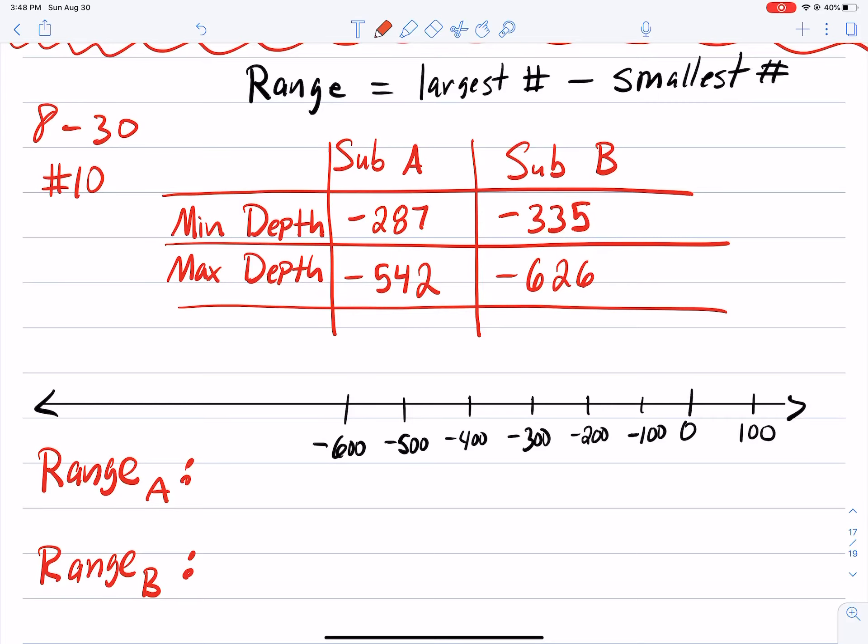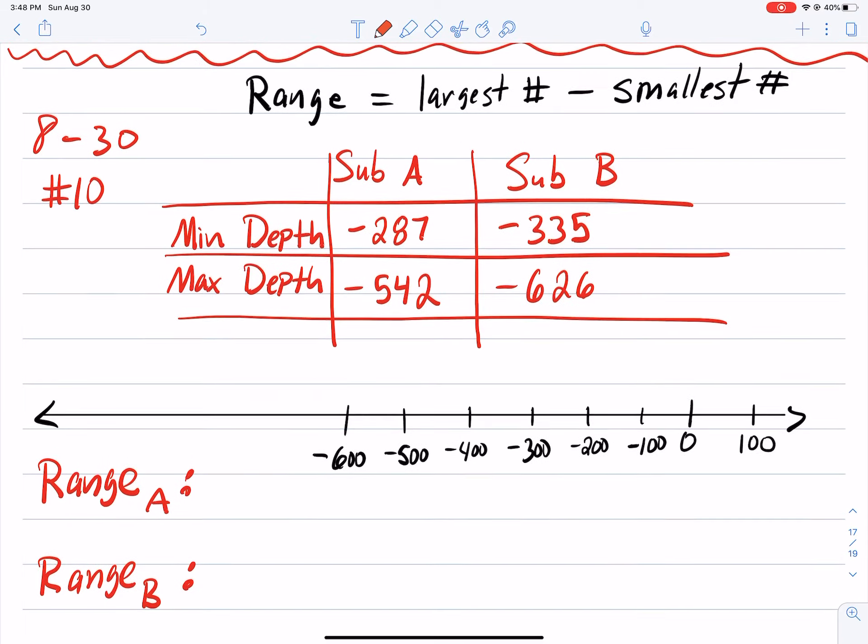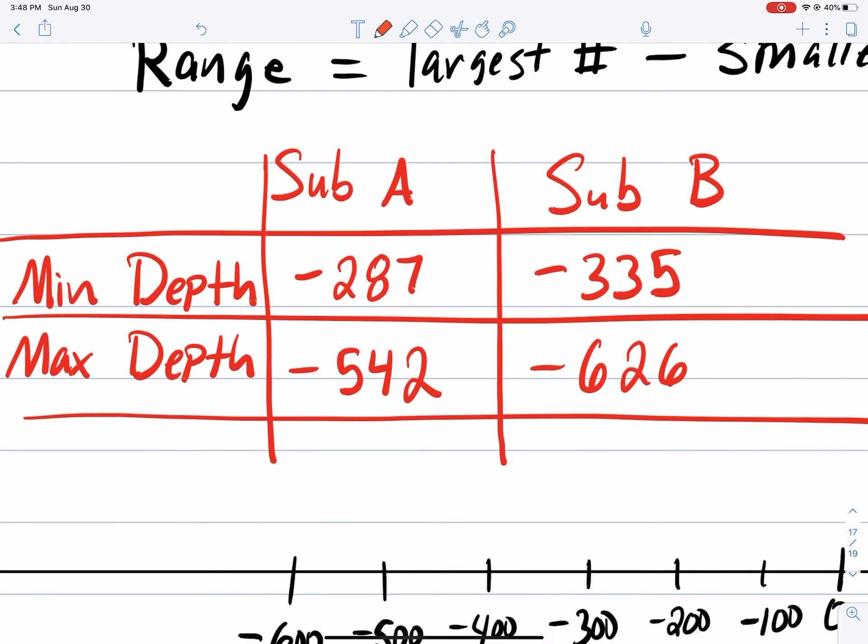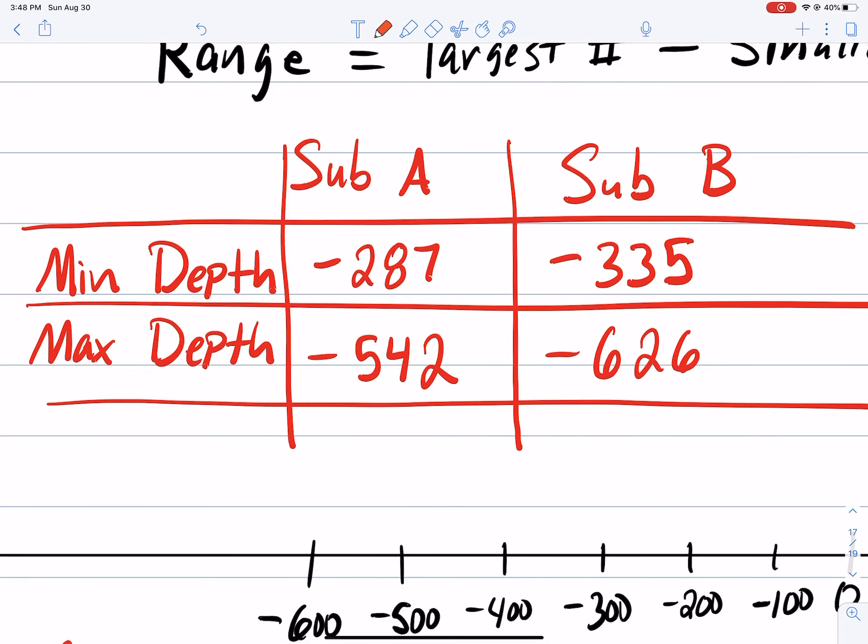Hey math class, this is Mr. Jacobs. Let's take a couple of minutes to look at questions on the quiz that we struggled with. So the first one is question number 10. It's a question about submarines, so I'm just gonna zoom in here and it says we have two submarines, submarine A and B.